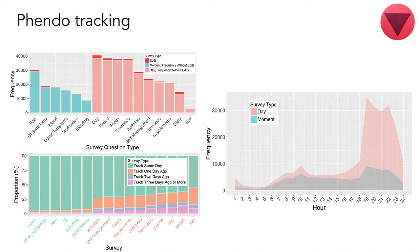People are tracking a lot in the evening but also throughout the day. We have a nice peak around notification times, which tells us that notifications help. We also have retroactive tracking — you can go back if you forgot to track something yesterday or two days ago. We found exactly what we'd expect: things tracked up to two or three days ago are their period and sexual activities, which seems very normal. Whereas day-to-day things like pain, GI, and bleeding are tracked within a day or two at most.